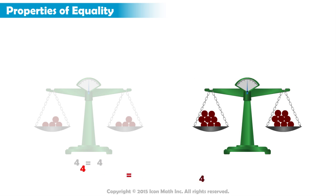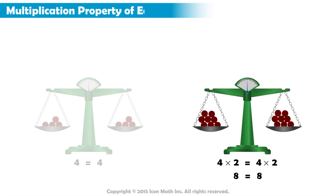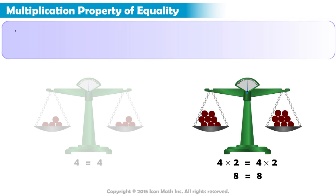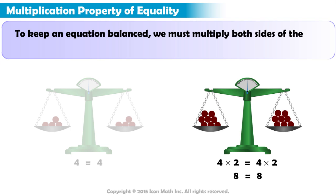If we multiply one side of an equation by 2, we must multiply the other side by 2 to ensure it remains true. The multiplication property of equality states that, to keep an equation balanced, we must multiply both sides of the equation by the same value.